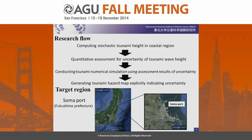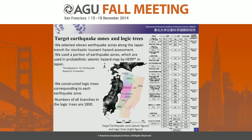This is the research flow of this study. First, we compute stochastic tsunami height in the coastal region using a logic tree approach and quantify the uncertainty of tsunami wave height, then conduct tsunami numerical simulation using the assessment results of the uncertainty. Finally, we propose a tsunami hazard map explicitly indicating the uncertainty. The target region of this study is Soma City, Fukushima Prefecture in Japan. I will now explain details of computing stochastic tsunami height at Soma Port.